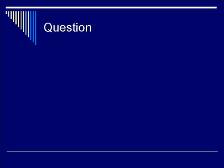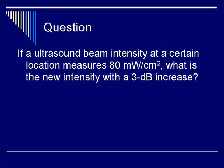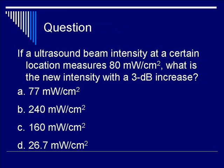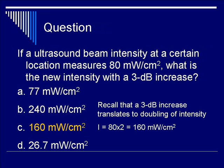Let's do a question. If an ultrasound beam intensity at a certain location measures 80 mW per square centimeter, what is the new intensity with a 3 dB increase of this initial signal? Is it A, 77 mW per square centimeter; B, 240 mW per square centimeter; C, 160 mW per square centimeter; or D, 26.7 mW per square centimeter? The correct answer is C, 160 mW per square centimeter.